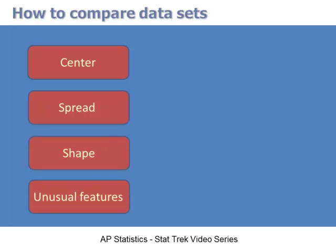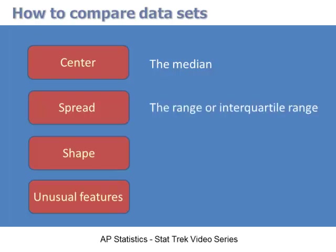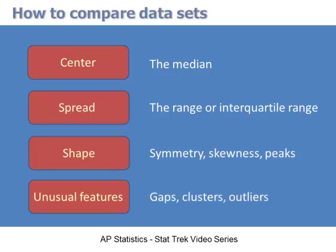The center of the distribution is the point where about half of the observations are on either side — that is, the median of the data set. Spread refers to the variability of the data set, which is usually measured by the range or interquartile range. The shape of the data set is described by attributes like symmetry, skewness, and number of peaks. And unusual features refer to things like gaps, clusters, and outliers.